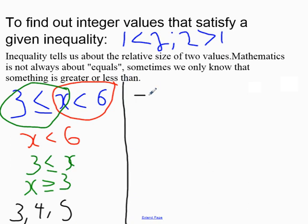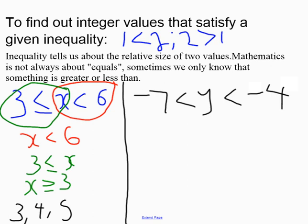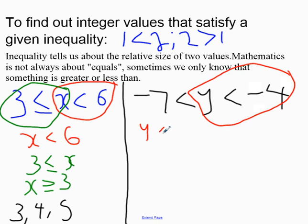Now another example we can have is negative 7 less than y, less than negative 4. This is in two parts, like we said. The first part gives us y is less than negative 4. The second part we write separately.